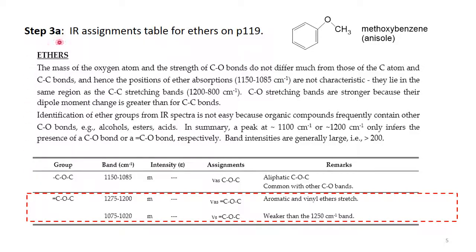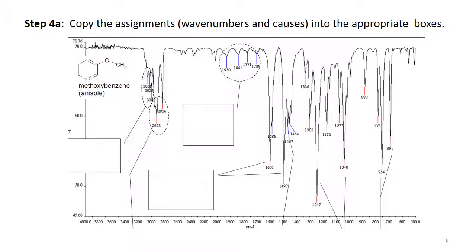Here is the IR assignment table for ethers. Note that aromatic and vinyl ethers have an asymmetric C-O-C stretch between 1200 and 1275 wavenumbers, and a symmetric C-O-C stretch between 1020 and 1075 wavenumbers. Here is the scan of methoxybenzene where you can identify these C-O-C stretches as well as the other fingerprint bands indicative of a monosubstituted aromatic ring.